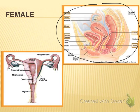Oviducts extend from the ovaries to the uterus and may also be called fallopian tubes. They transport the egg from the ovary to the uterus, where fertilization may happen. The uterus has a thick muscular wall and an inner membrane called the endometrium, which is highly supplied with blood and rich in nutrients to support a developing fetus. If the egg is not fertilized, it is expelled along with the endometrium in the menstrual cycle. The uterus opens via the cervix to the vagina, which is a muscular tube that can enlarge for offspring to exit.